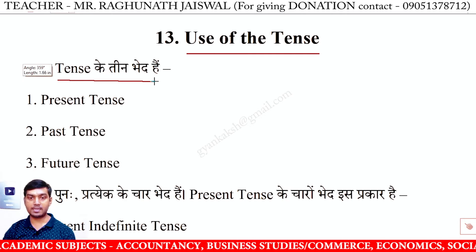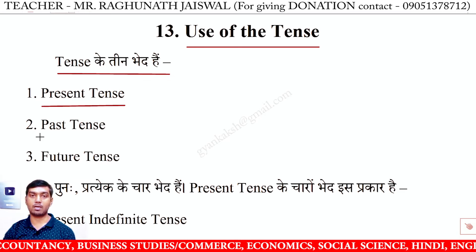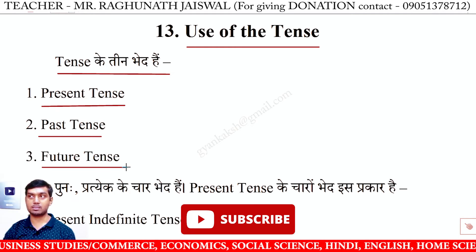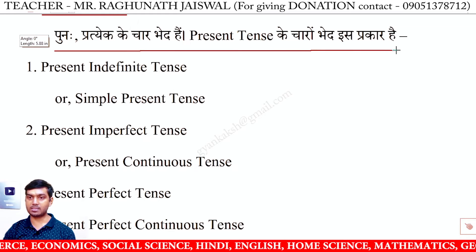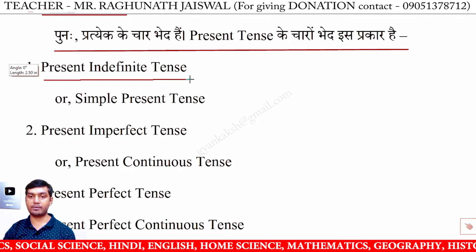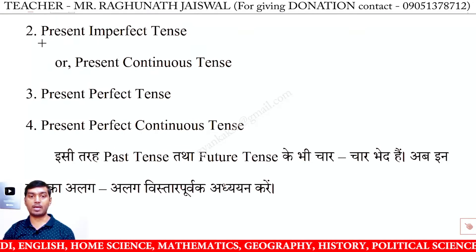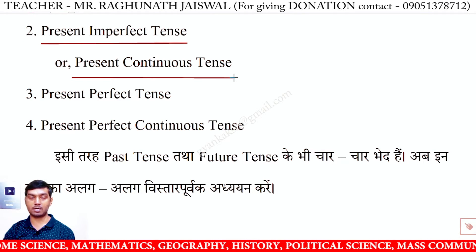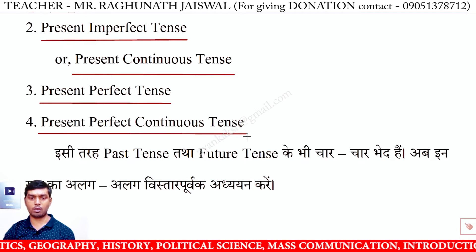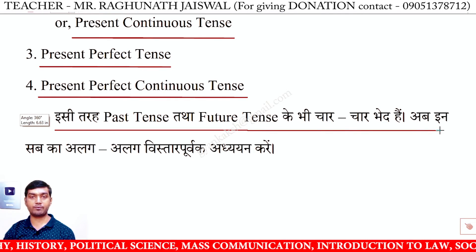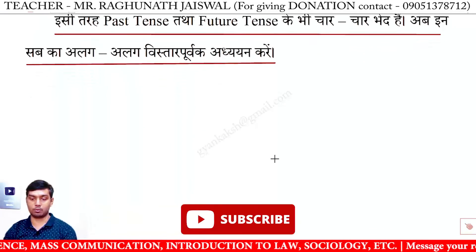Tense के तीन भेद हैं: Present tense (वर्तमानकाल), Past tense (भूतकाल), Future tense (भविष्यकाल). Present tense के चार भेद इस प्रकार हैं: Present Indefinite tense (Simple Present tense) — यहाँ हम लोग अभी इसी का use किये। Present Imperfect tense (Present Continuous tense). Present Perfect tense. Present Perfect Continuous tense. इसी तरह Past tense और Future tense के भी चार-चार भेद हैं। इन सब का अलग-अलग विस्तारपूर्वक अध्ययन करेंगे।